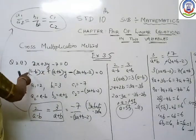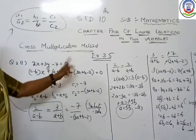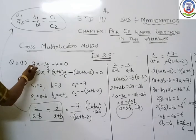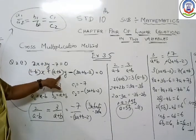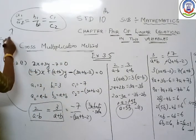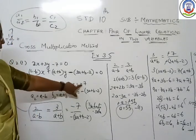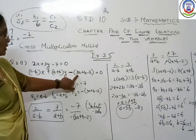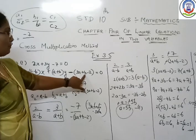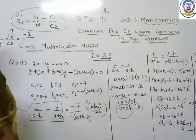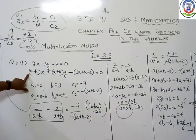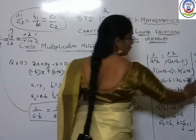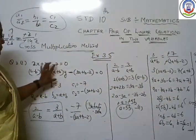Let us verify: a1/a2 = 2/(a−b) = 2/(5−1) = 2/6 = 1/2. b1/b2 = 3/(a+b) = 3/(5+1) = 3/6 = 1/2. c1/c2 = −7/(−(3×5 + 1 − 2)) = −7/(−14) = 1/2. All three ratios are equal, confirming the equation has an infinite number of solutions when a = 5 and b = 1.